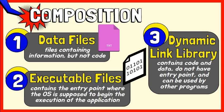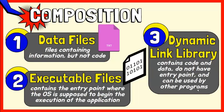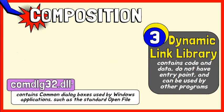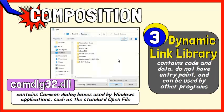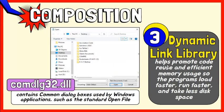Additionally, DLL files can also be found in software. A DLL is a library that contains code and data. They do not have an entry point and cannot be executed on their own. They commonly contain functions and procedures that can be called or used by other programs. For example, in Windows operating systems, the COMDLG32.DLL contains common dialog boxes used by Windows applications, such as the standard open file dialog box. It helps promote code reuse and efficient memory usage so the programs load faster, run faster, and take less disk space on the computer.